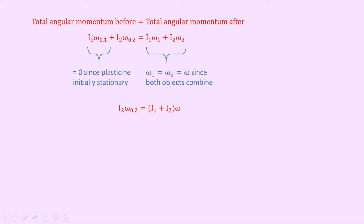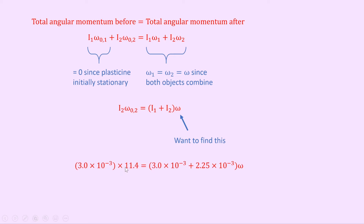We've factorized and taken omega outside the brackets, and we want to find omega. Substituting in our numbers: I2 is 3.0 times 10 to the minus 3 times 11.4 equals I1 plus I2, which is 3.0 times 10 to the minus 3 plus 2.25 times 10 to the minus 3, times omega. Adding and dividing gives omega equals 0.0342 divided by 5.25 times 10 to the minus 3, which equals 6.51 radians per second.